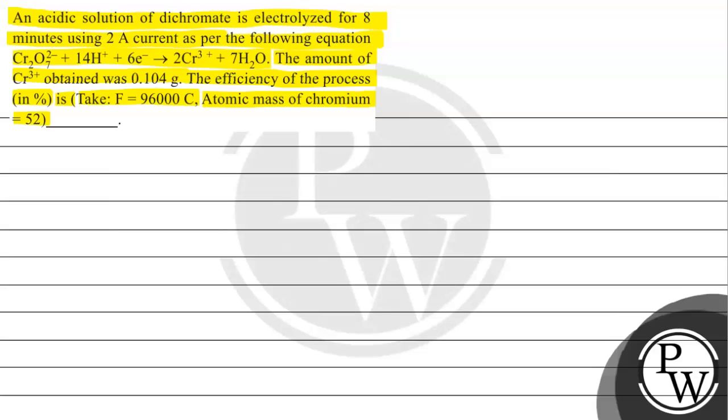For this we will see the key concept of this question. The efficiency is the key concept, and for electrochemical cells we find it by the formula: actual yield divided by theoretical yield.